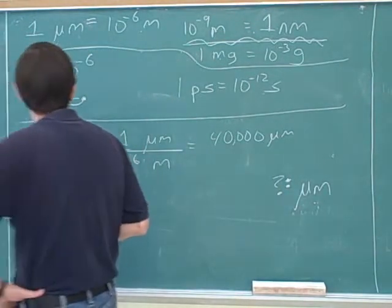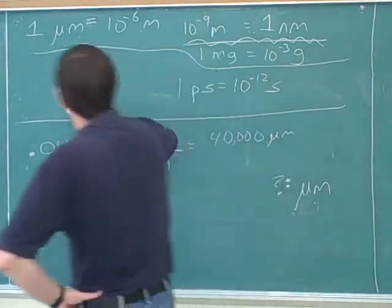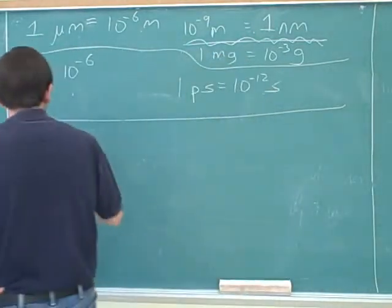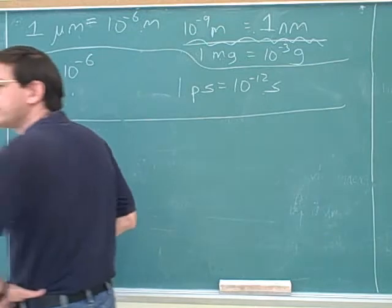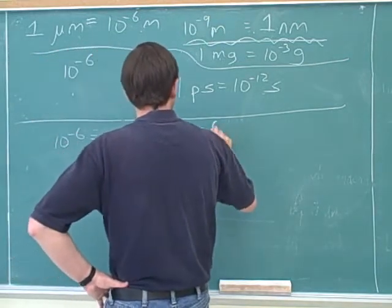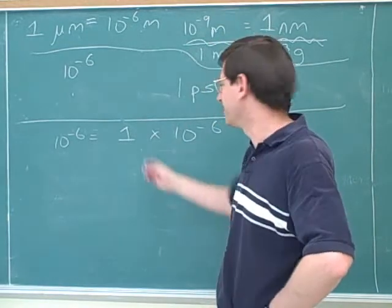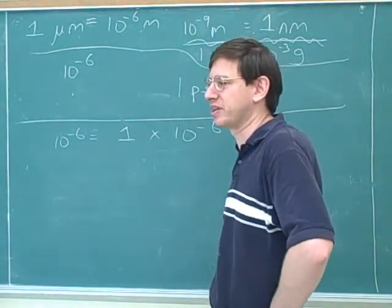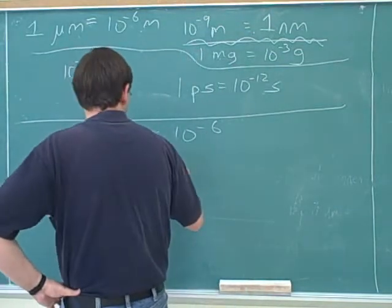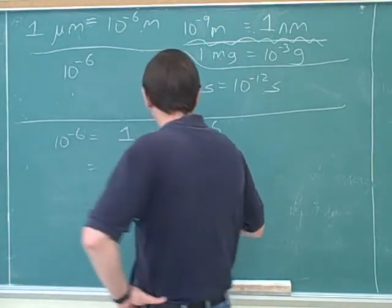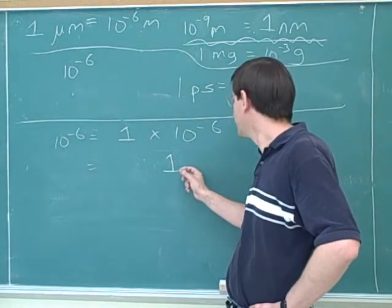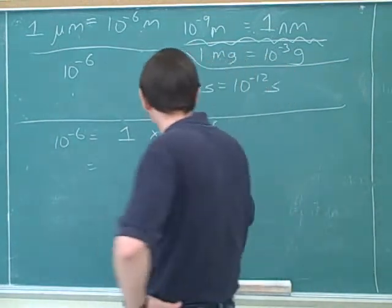Why do you start with the number one? Well, 10 to the negative six is really one times 10 to the negative six, right? It's always legal to put a one in front of something. That's why it makes sense to start with the number one. And I'd start with the decimal place over here because this is like the normal starting place for a decimal point. And now I move it six places to the left.